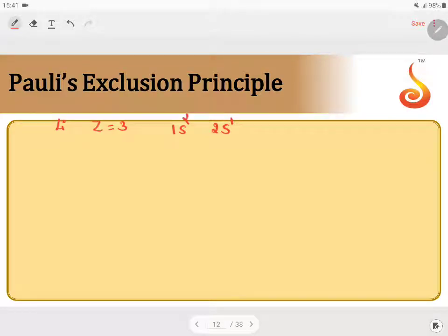Lithium is an element having the atomic number 3. Its electronic configuration is 1s2 2s1, meaning there are 3 electrons.